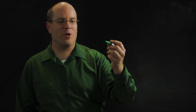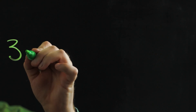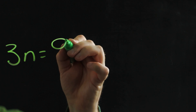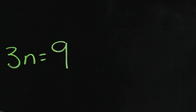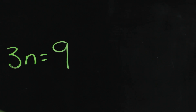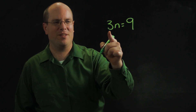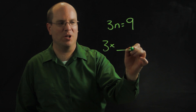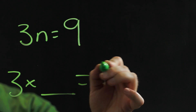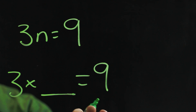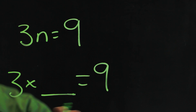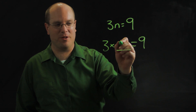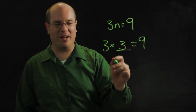The next thing that's hard for them is understanding what it means when you have a letter in a problem like this. So you have to teach them — this means three times blank equals nine. Start here. When you're doing something like this, they'll have no problem figuring out that a three goes in that blank.